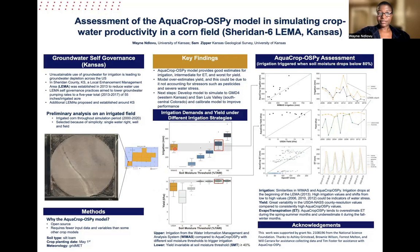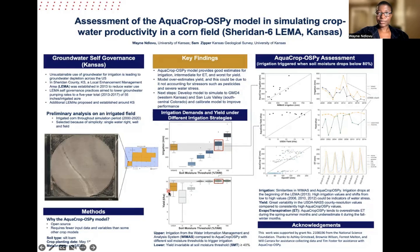Comparing the field observed irrigation, we saw it ranged between 350 to 450 millimeters. This was similar to AquaCrop's 80 percent soil moisture threshold values, suggesting that in this field irrigation is triggered when soil moisture drops below 80 percent. Under the same conditions, our yield values were higher than the county-level observed yield data from the USDA.